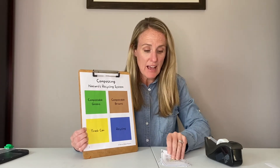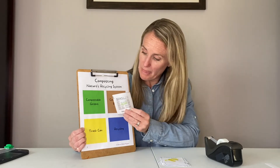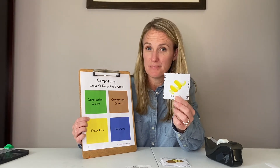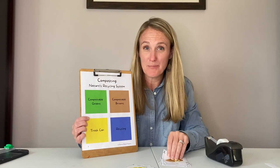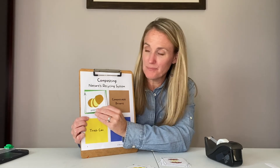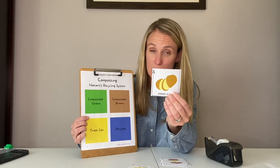Let's try some examples. Newspaper — where would that go? Compostable brown! What about a lemon rind — is it a compostable green, compostable brown, recycling, or trash? If you said compostable green, you're correct! Now how about a potato skin? If you said compostable green, you're also right.